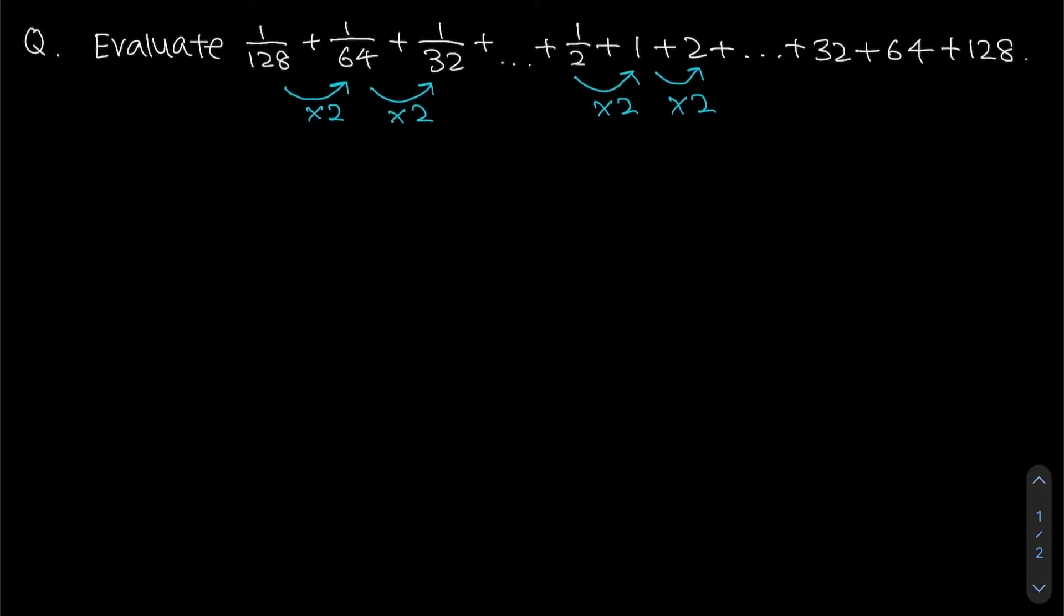We can let the entire expression be S. So let S equals 1 over 128 plus 1 over 64 plus 1 over 32 plus all the way until plus 32 plus 64 and plus 128.